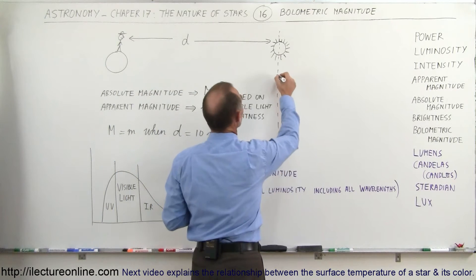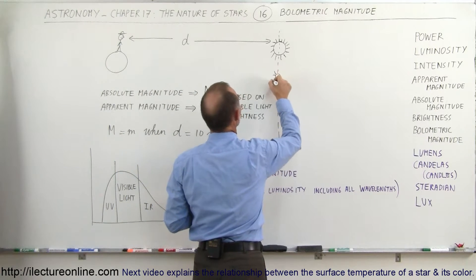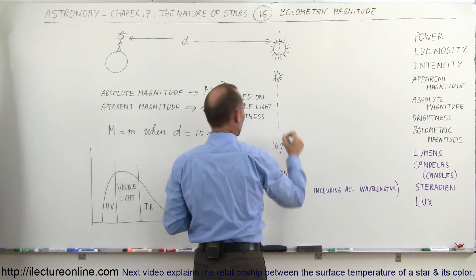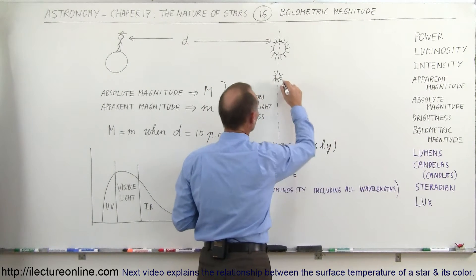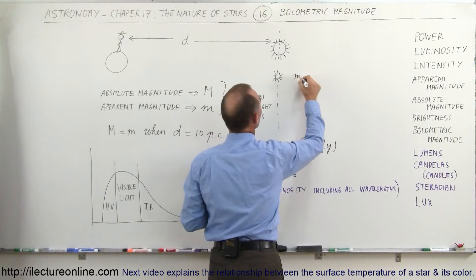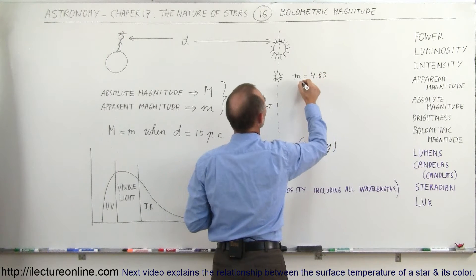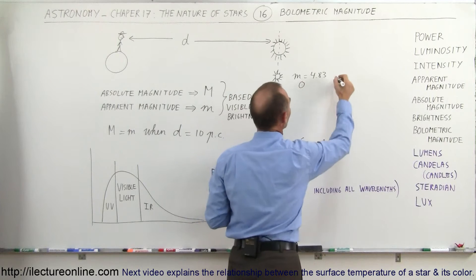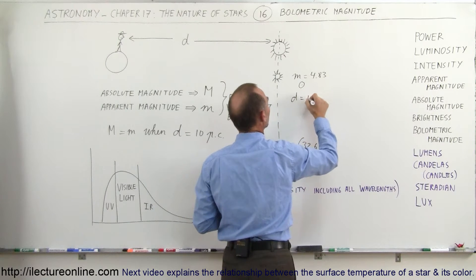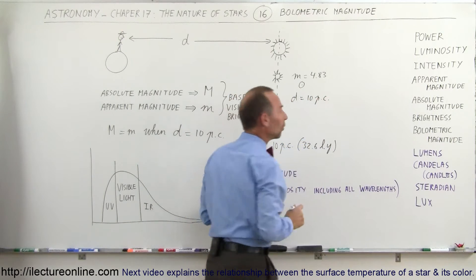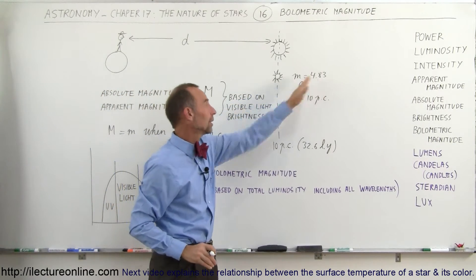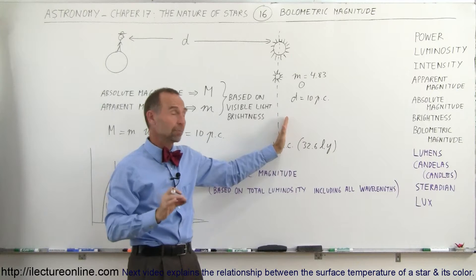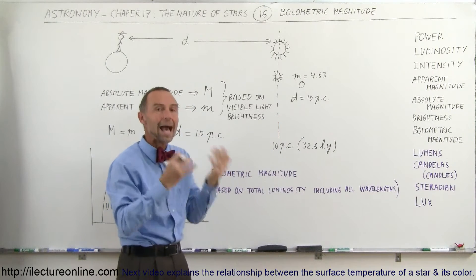So for example, if the Sun were placed at a distance of 10 parsecs, which is 32.6 light years, the apparent magnitude would be equal to 4.83. Since the Sun would have an apparent magnitude of 4.83 if it was placed at a distance of 10 parsecs, we call that the absolute magnitude.